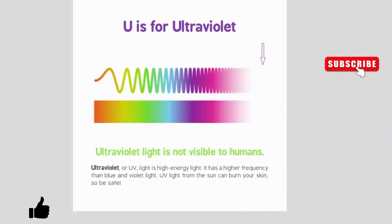U is for ultraviolet. Ultraviolet light is not visible to humans. Ultraviolet or UV light is high energy light. It has a higher frequency than blue and violet light. UV light from the sun can burn your skin, so be safe.